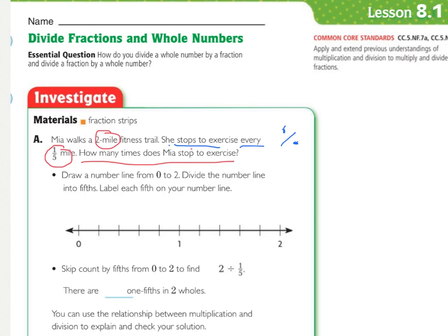So the first step that we need to do is draw a number line from 0 to 2. Because we're doing 2 miles. And then divide the number line into fifths because that's how often she's stopping. And then label each fifth of our number line. So here we have 0 all the way up to 2. And then right in half is going to be 1.